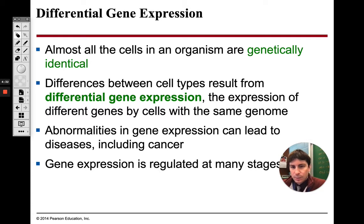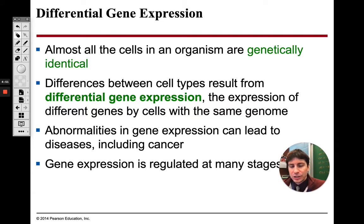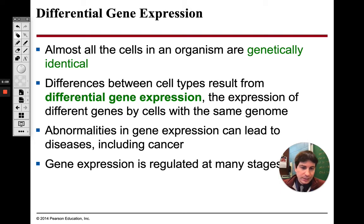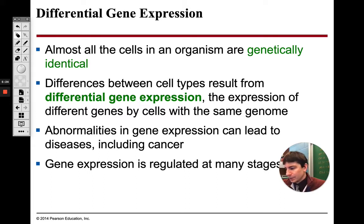All of our cells in our body, for the most part except for our sex cells, are going to be genetically identical. The DNA is going to be the same in all of our cells. However, the expression of this DNA is going to be different between our cells. Heart cells should be expressing the same genes as other heart cells, and lung cells should do the same. But comparing a lung cell and a heart cell, hopefully they are expressing different genes. If we have abnormalities in what genes are expressed by certain cells, we can get different diseases, we can get cancer.